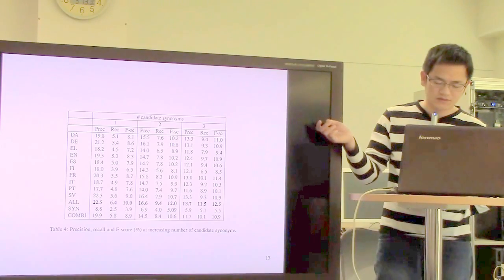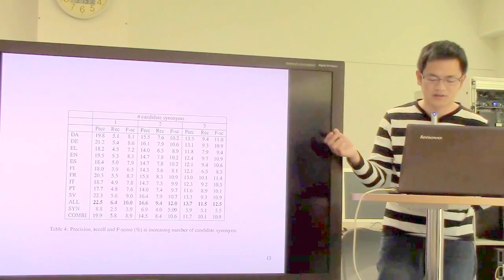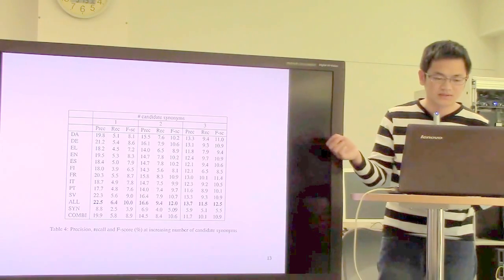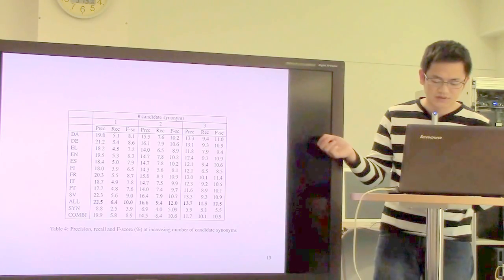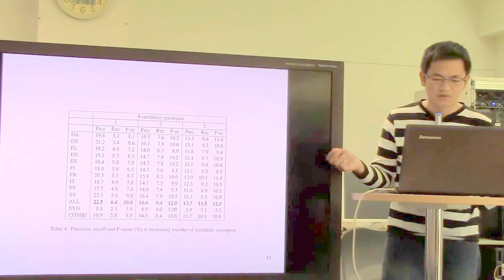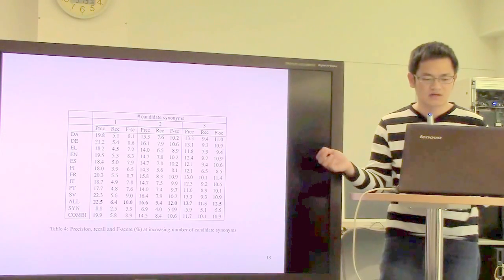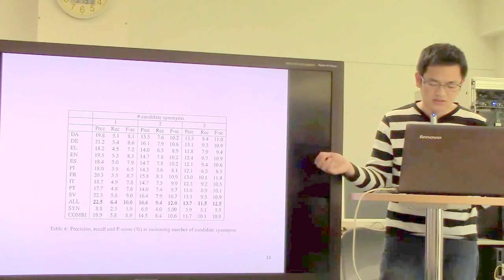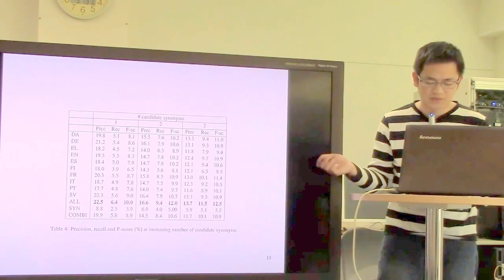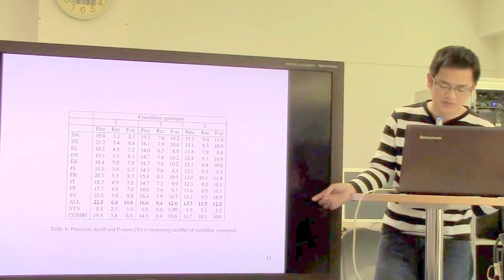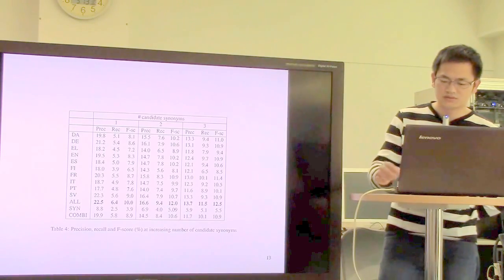In the first ten rows are the results for all language pairs. In the eleventh row corresponds the setting where features from all languages are combined. We can see the result is better than the result of the syntactic-based method in the last row. We can see the combination of the syntactic-based and alignment-based methods.